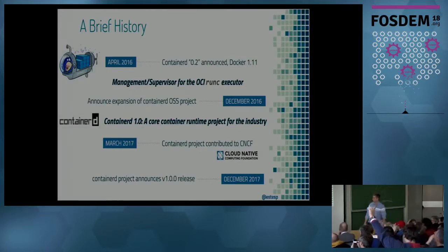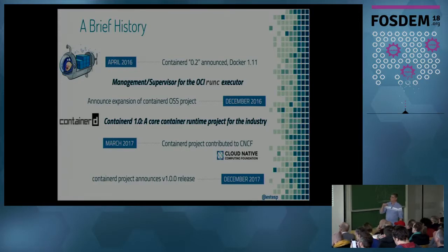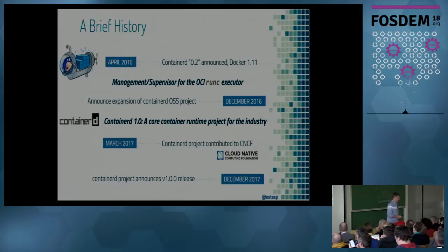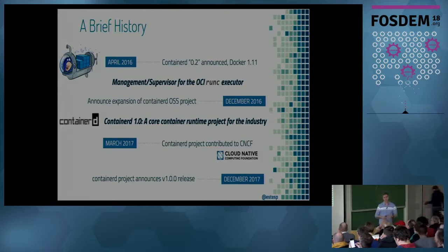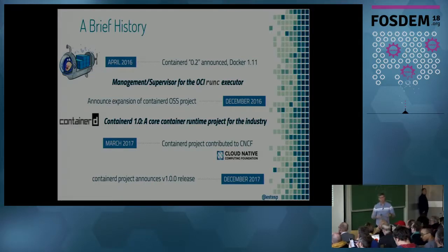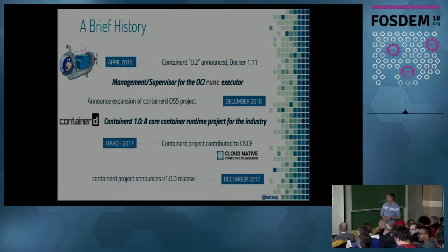ContainerD has been mentioned at least a couple times so far today. ContainerD showed up around the same time that the Open Container Initiative was formed. The OCI RunC has been mentioned here several times already this morning. RunC is that executor — the implementation of OCI's runtime spec. At the point that Docker decided to use RunC, ContainerD was created as a simple kind of management supervisor on top of the RunC processes. Then later that year, it was announced that ContainerD would expand to be a more fully functional container runtime that you could use separate from Docker. That was announced late December 2016.